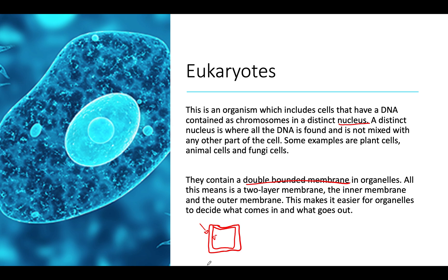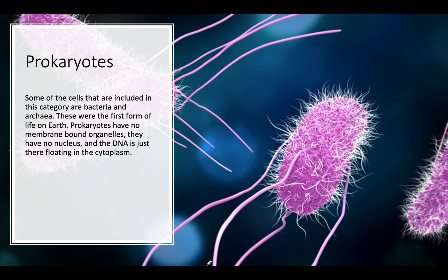Moving on to prokaryotes — the main types included in this category are bacteria and archaea. These were the first form of life on Earth, formed before animal and plant cells were discovered. Prokaryotes have no membrane-bound organelles and no nucleus. The DNA is just floating in the cytoplasm — a key difference from eukaryotes, where the DNA is held in the nucleus.